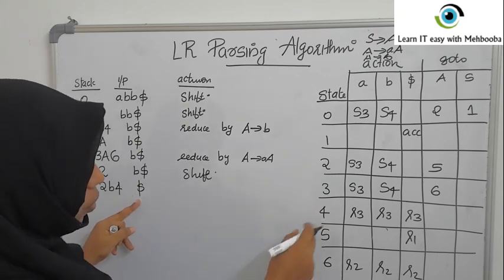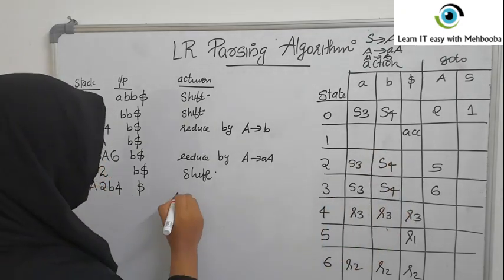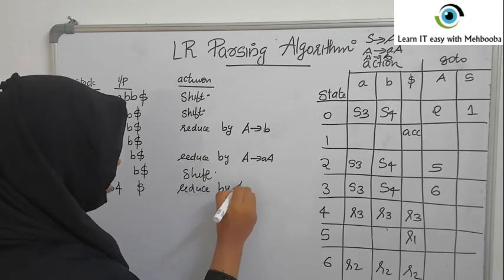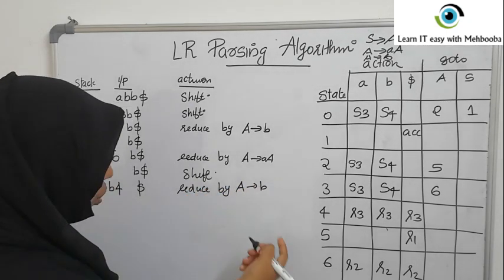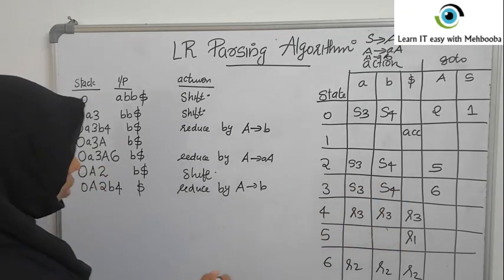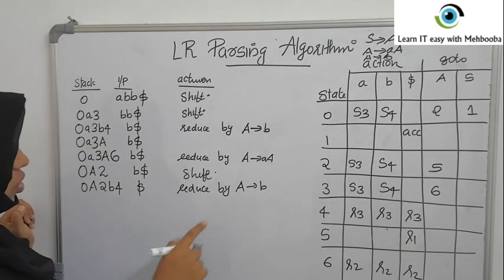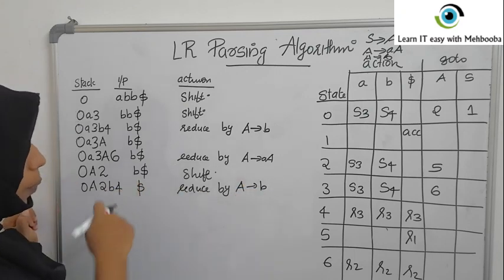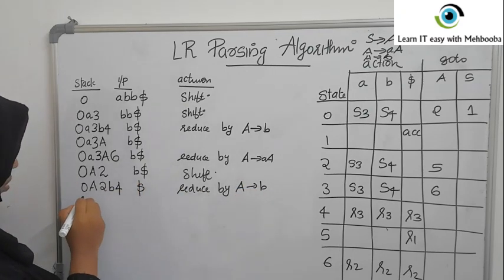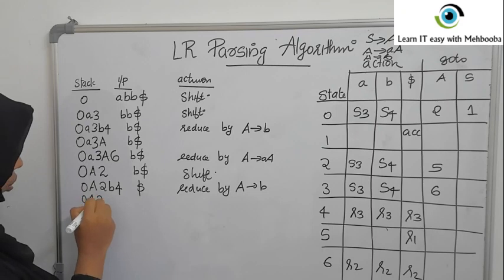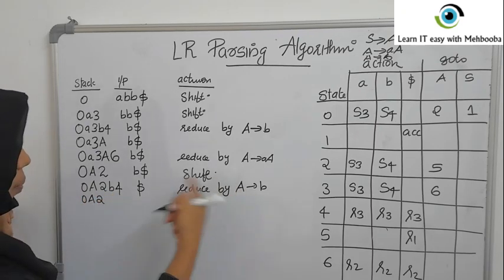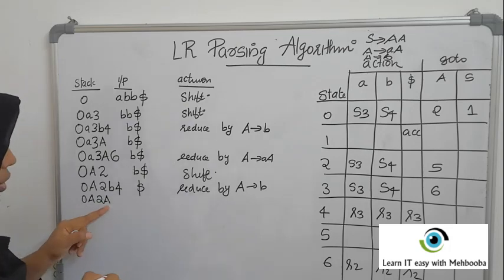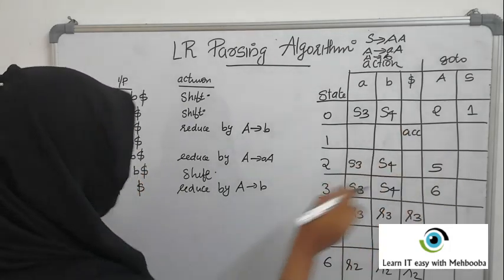Check 4 with $ — it is R3, reduce by production 3: A→B. 2×1=2 symbols are popped off the stack. Push the left-hand side A onto the stack. The state now on top is 2, so apply GOTO on 2A which gives 5. Push 5 onto the stack.